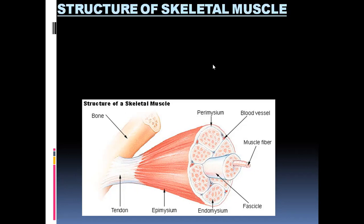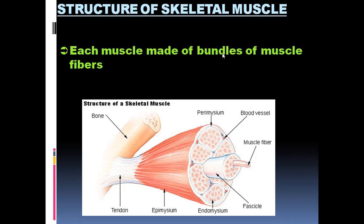Both cardiac and smooth muscles are involuntary. Skeletal muscles, to a large extent, are voluntary. Each muscle is made up of bundles of muscle fibers.